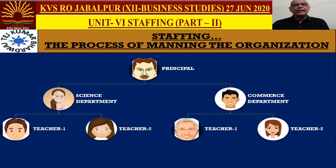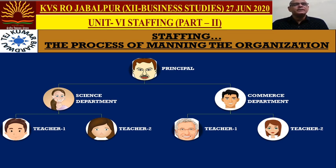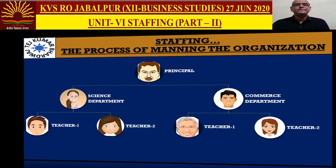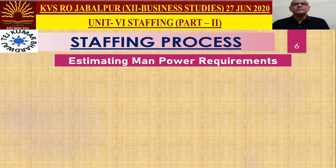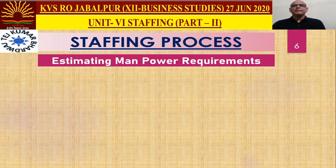In your school, you must have observed the hierarchy of management: first the principal, then various departments with heads of departments, and teachers working in those departments. This is how we man the organization during staffing. The staffing process includes: estimating manpower needs, recruitment, selection, placement and orientation, training and development, performance appraisal, promotion, career planning, and compensation.